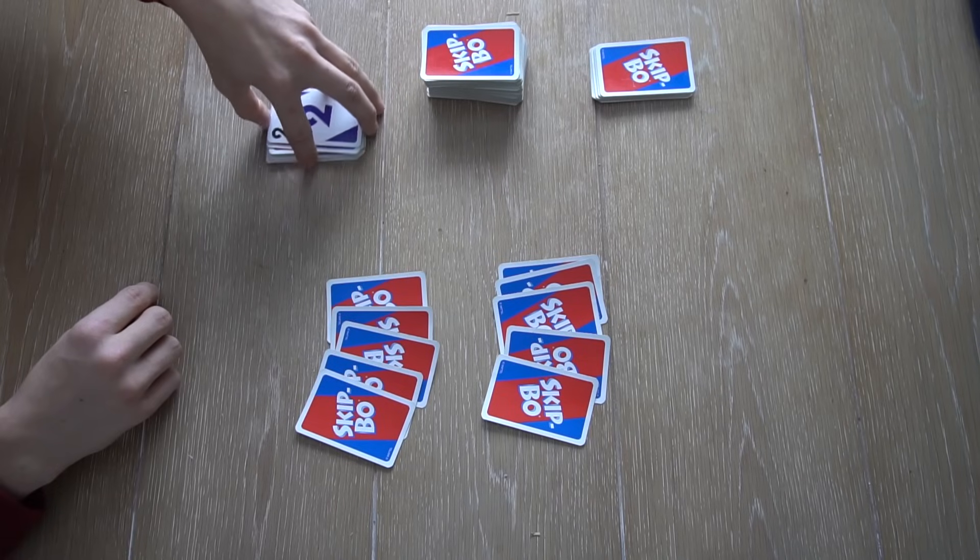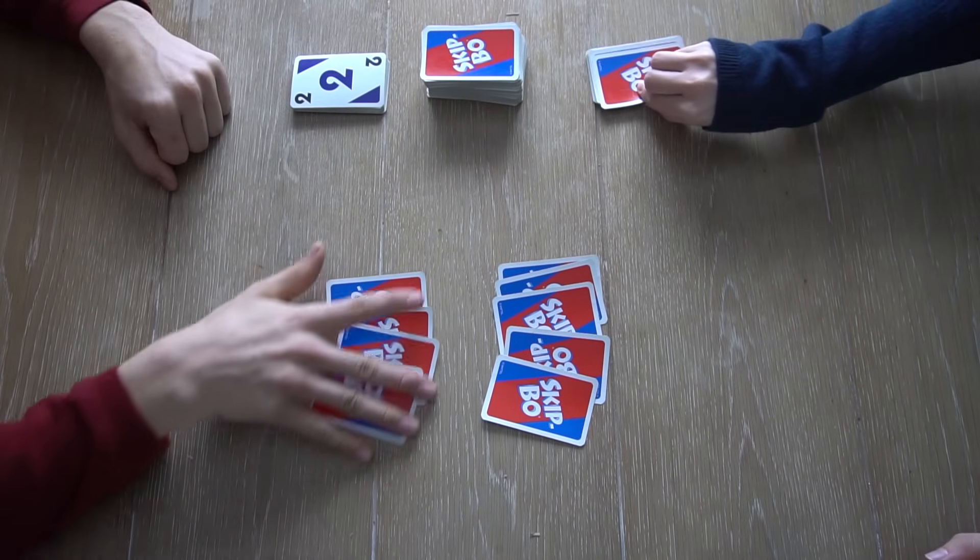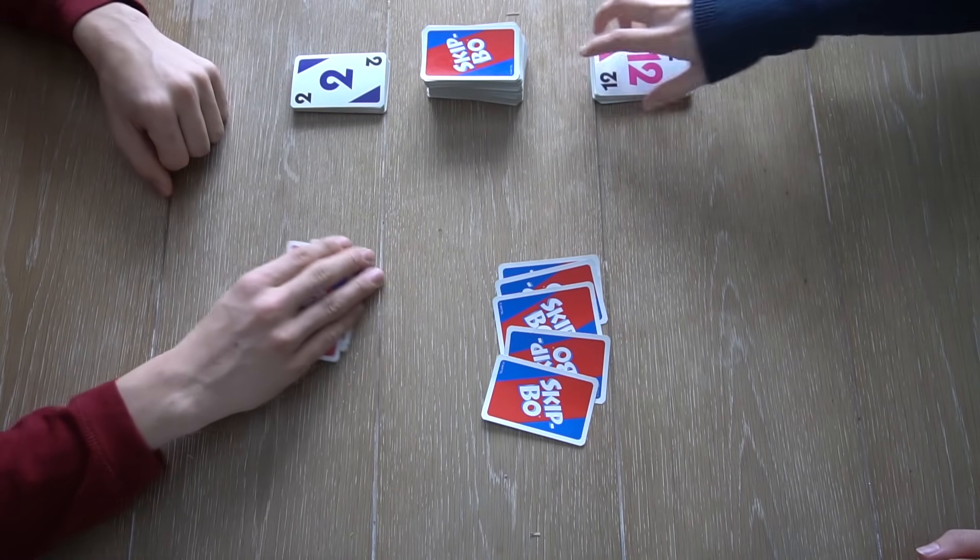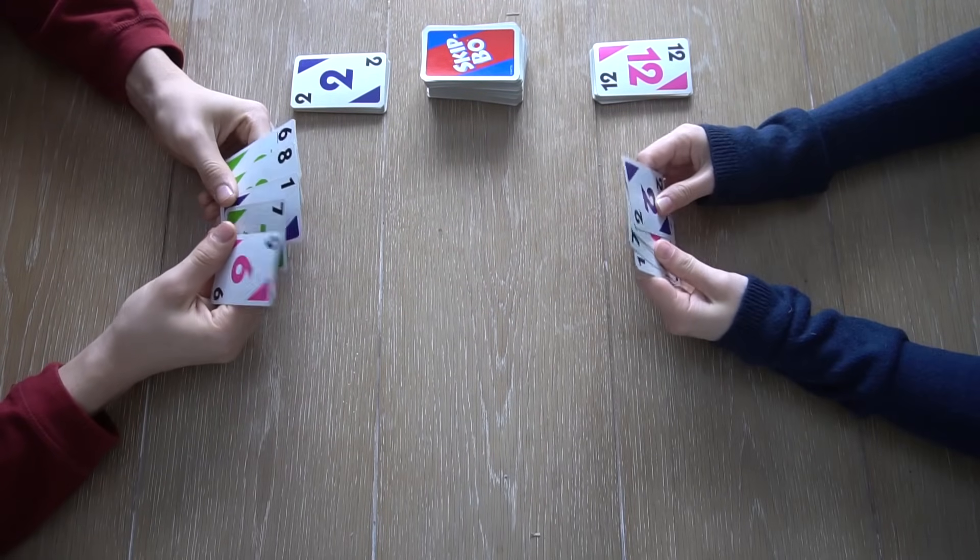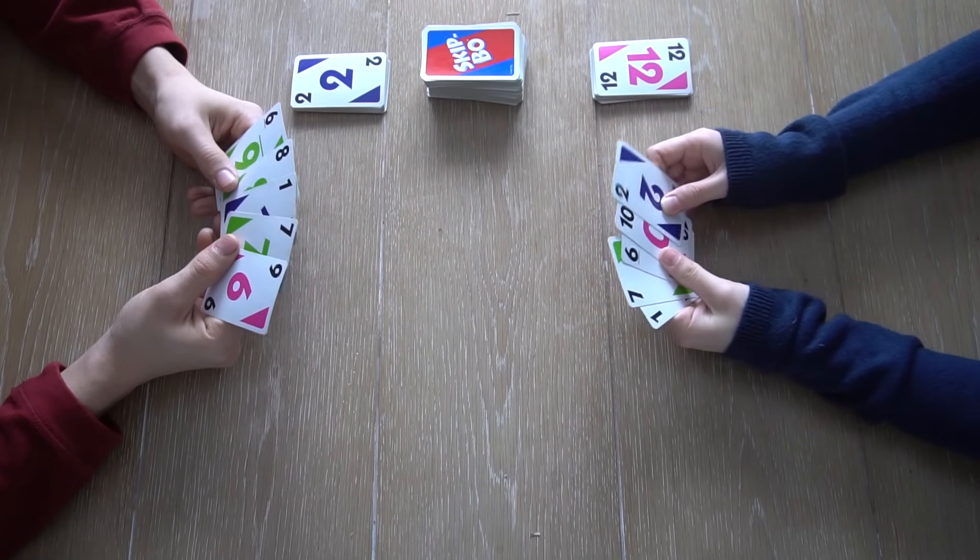To begin the game, each player flips over the top card of their stockpile, and the youngest player gets to go first and then clockwise from there. Now you can start making building piles.